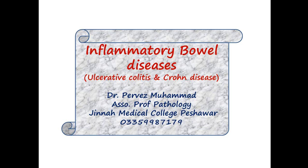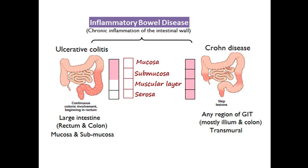Crohn's disease can involve any part of the digestive tract from the mouth to the rectum, while ulcerative colitis is primarily an autoimmune disease which involves the large intestine. Ulcerative colitis involves only the mucosa and submucosa.